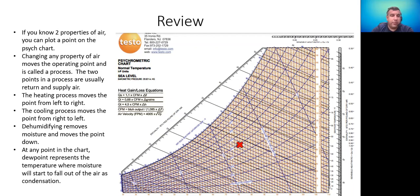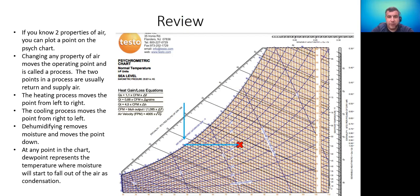At any point on the chart, dew point represents the temperature at which moisture is going to start condensing or falling out of the air. This moisture is called condensation. To figure out your dew point temperature, you take your operating point and draw a straight line all the way to the left. When it hits the saturation curve, that number is your dew point. In this case, the saturation curve hits the dew point line right at 55 degrees.